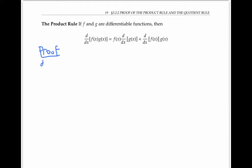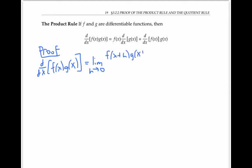To find the derivative of the product f(x) times g(x), I'm going to start as usual with the limit definition of derivative. So it's the limit as h goes to zero of f(x+h) · g(x+h) minus f(x) · g(x), all over h.